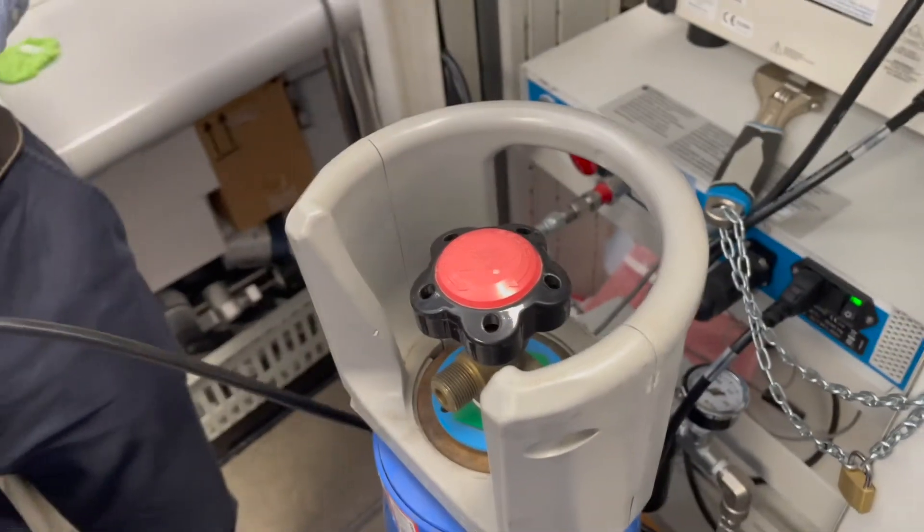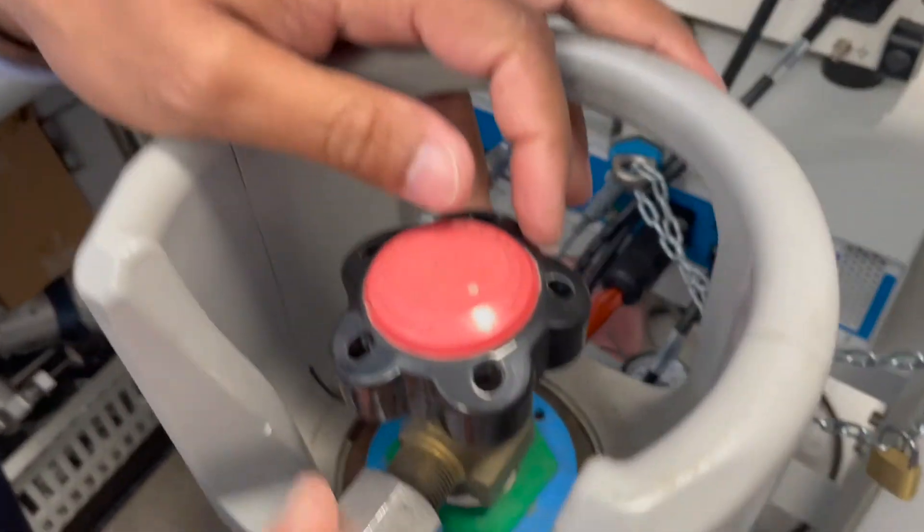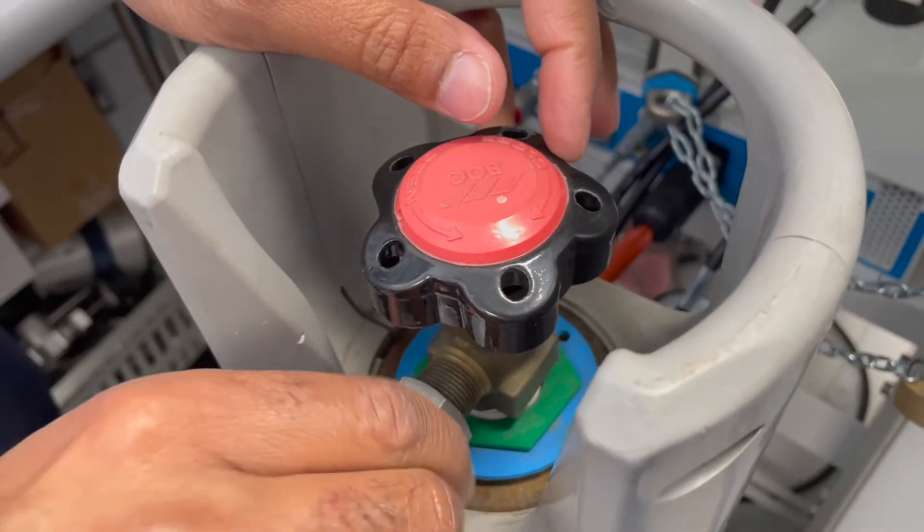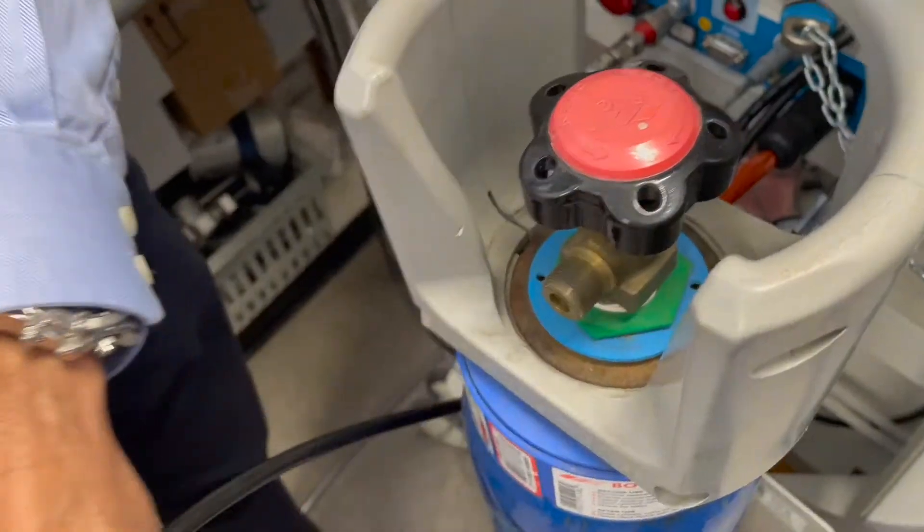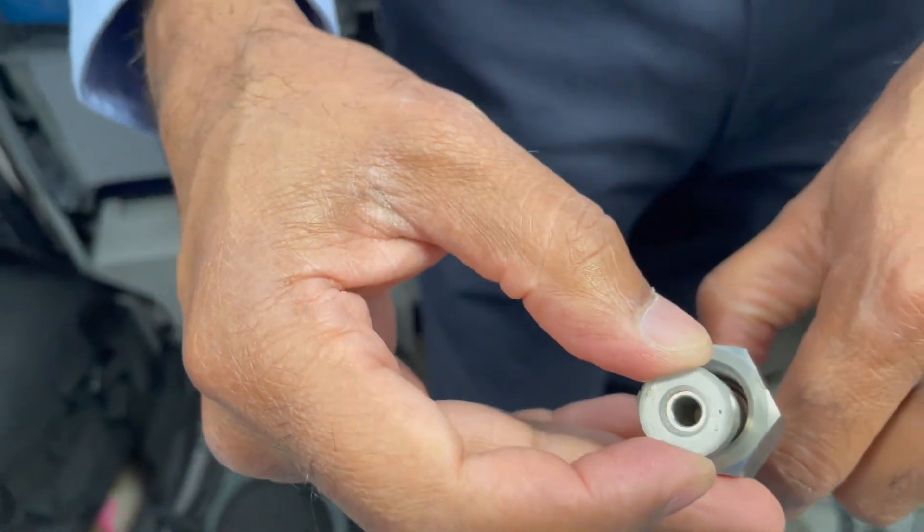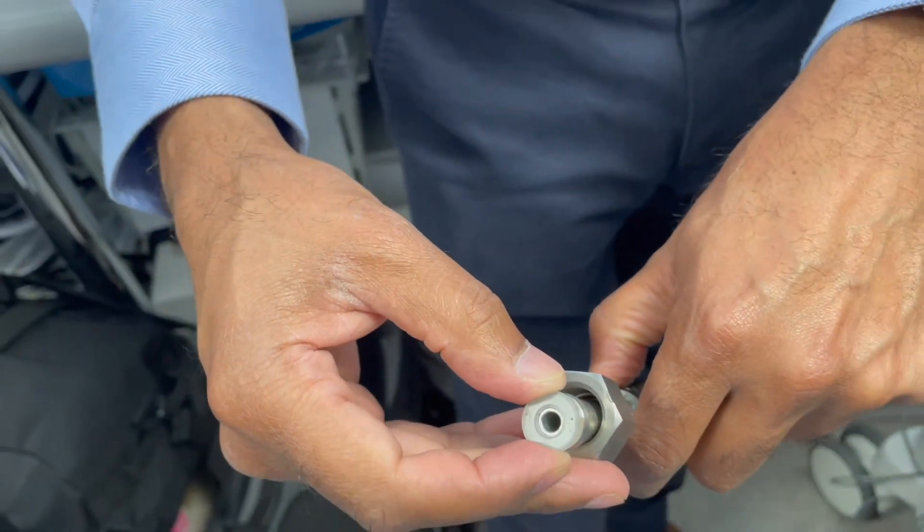Strictly speaking they say this can be hand tightened but to be honest with you all the ones I've tried to do to hand tighten they leak. There's a little washer, so if this washer isn't there that's when it normally leaks so when you're changing it just be careful because sometimes it can just fall out.